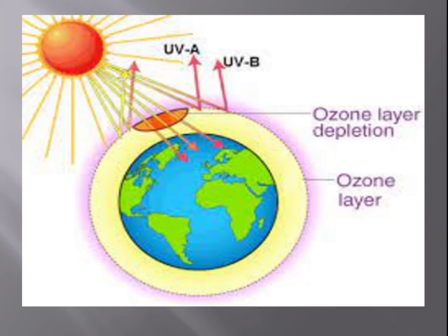So the ozone layer protects us from these rays. It prevents the rays from coming onto the earth — it reflects them back. When we were learning about the importance of atmosphere, we learned that some rays are reflected back. Those are the ultraviolet rays which are very, very harmful to us. And the ozone layer reflects back those ultraviolet rays. But this ozone layer has started to undergo depletion.